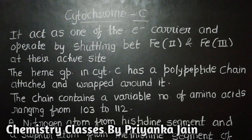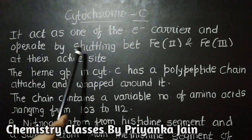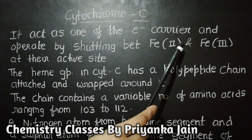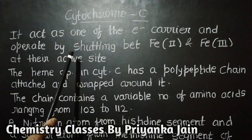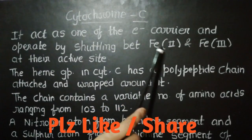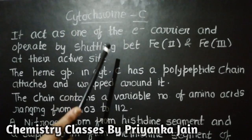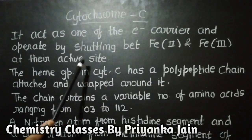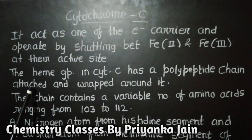Cytochrome c acts as a one-electron carrier. It operates by shuttling between the Fe²⁺ and Fe³⁺ oxidation states at its active center. When the iron shuttles between these two oxidation states, one electron is transferred by cytochrome c. The heme group in cytochrome c has a polypeptide chain attached to and wrapped around it.